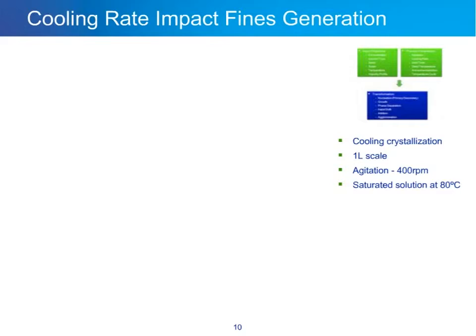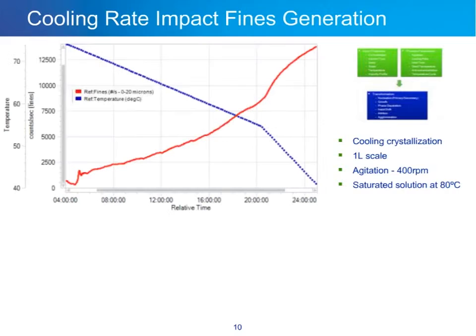This is a cooling crystallization at one-liter scale, with agitation at 400 RPM and a saturated solution at 80°C. Many examples today come from the pharmaceutical industry, so we can't go into a lot of detail about what the compound is, but we can show the trends. On the FBRM trend, the x-axis is time. There are two y-axes: fine counts measured by FBRM and temperature. We see a slow cooling rate over the first 20 hours, then an increased cooling rate over the final four hours. Right at the point where the cooling rate increases, we see an increase in the fines generation rate.